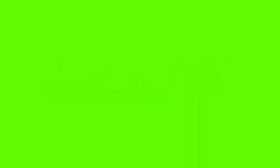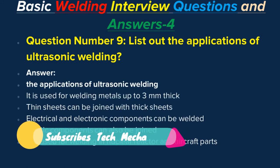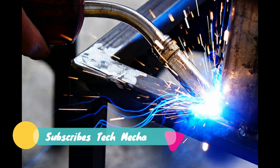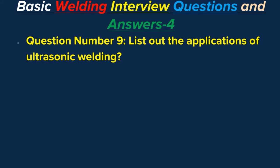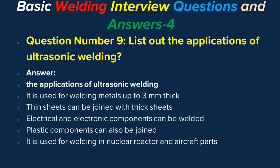Question number nine: List out the applications of ultrasonic welding. Answer: Ultrasonic welding is used for welding metals up to 3mm thick. Thin sheets can be joined with thick sheets, electrical and electronic components can be welded, plastic components can also be joined, and it is used for welding in nuclear reactor and aircraft parts.